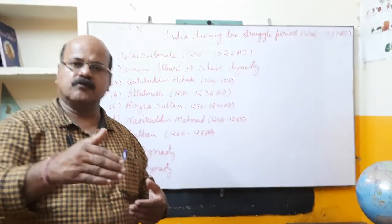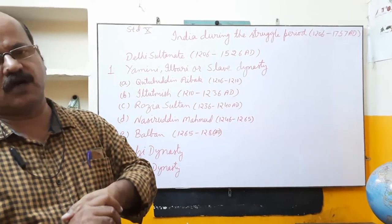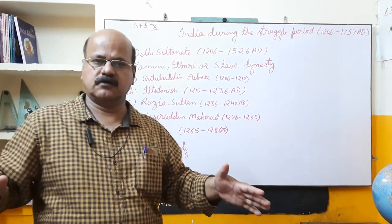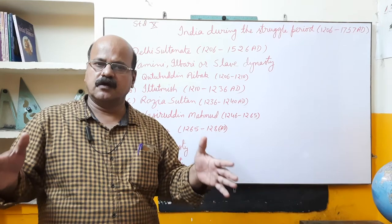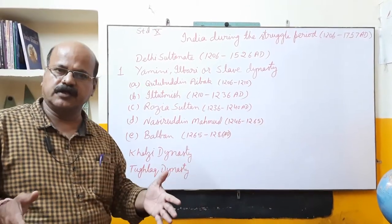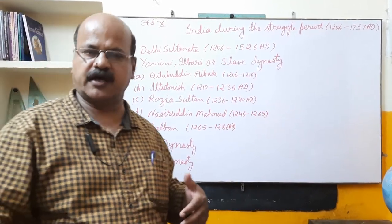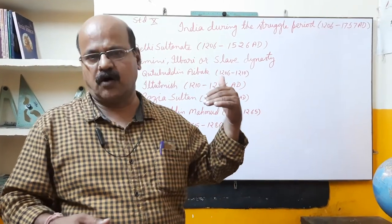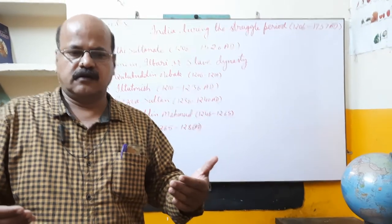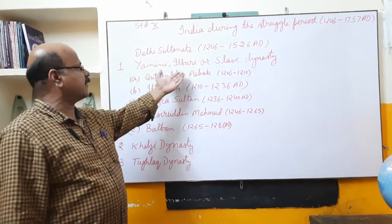Then came Muhammad Ghori, who was defeated in the first Battle of Tarain by Prithviraj Chauhan, but in the second Battle of Tarain he defeated Prithviraj Chauhan. From there, the Muslim empire was established in India. After some time, Muhammad Ghori went back to Central Asia, giving charge to Qutbuddin Aibak as Sultan here. When he went to Central Asia, he died. Now Qutbuddin Aibak became the Sultan of the Sultanate and he established the Slave dynasty.